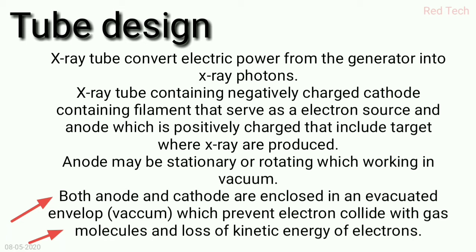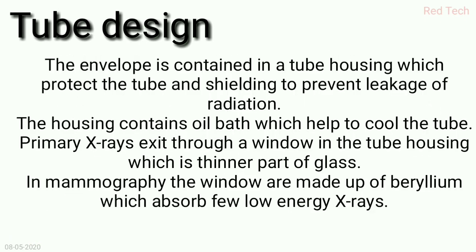Both the anode and cathode are enclosed in an evacuated envelope — basically in vacuum with no air present. This prevents electrons from colliding with gas molecules and losing kinetic energy. If air were present, the energetic electrons accelerating towards the anode might lose their kinetic energy.